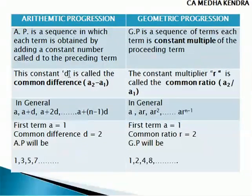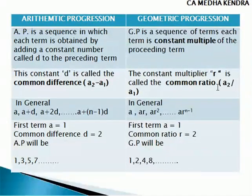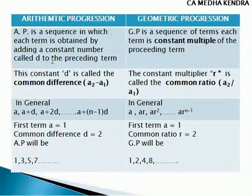In arithmetic progression, the constant is called D, which is the common difference. It can be obtained by subtracting consecutive terms: second term minus first term, or third term minus second term, and so on. In geometric progression, the constant multiple is called R, the common ratio, obtained by dividing subsequent terms: second term divided by first term, third term by second term, and so on.